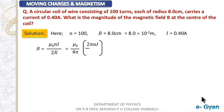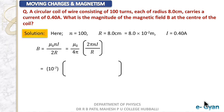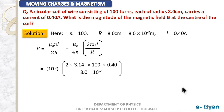So we write μ₀/4π multiplied by 2πNI divided by R. The reason for this arrangement is that μ₀ divided by 4π equals 10 to the power minus 7, making it easier to solve. Substituting values: 2π = 2 × 3.142, N = 100, I = 0.4, and radius in SI units = 8 × 10⁻² meters. The final answer comes out to be 3.14 × 10⁻⁴ tesla.